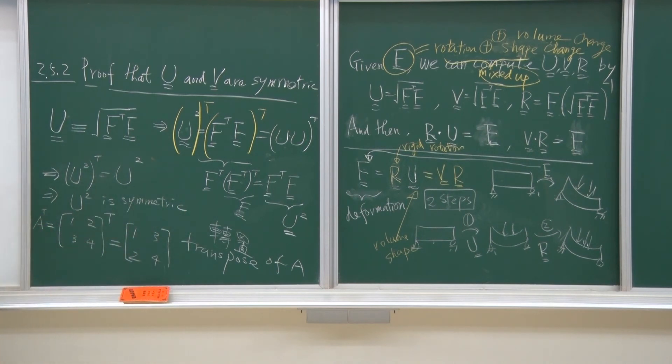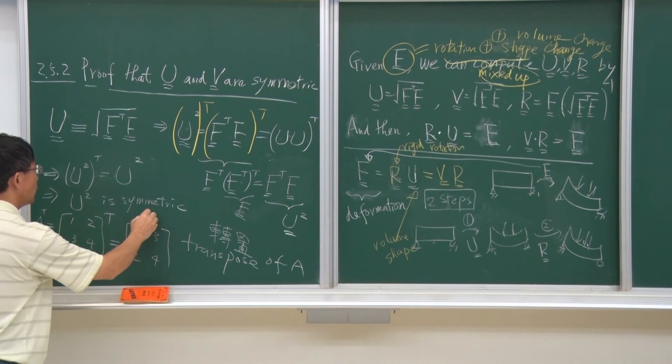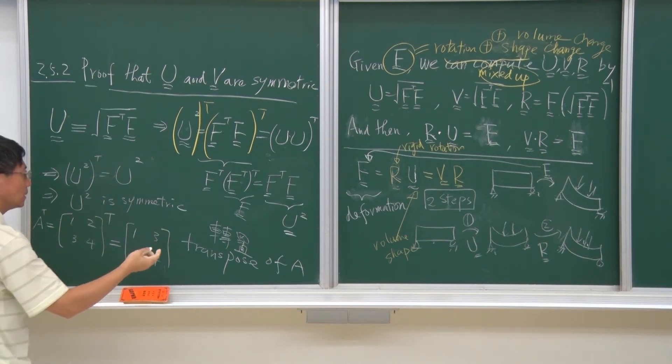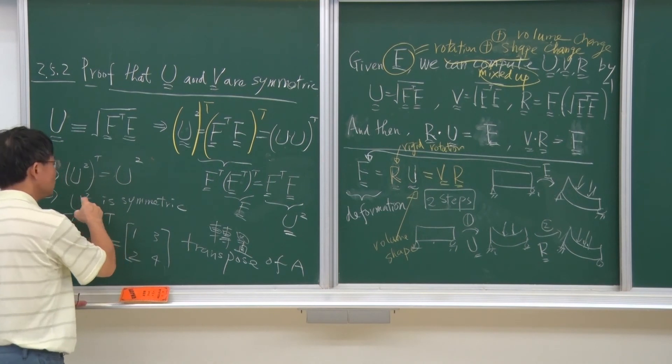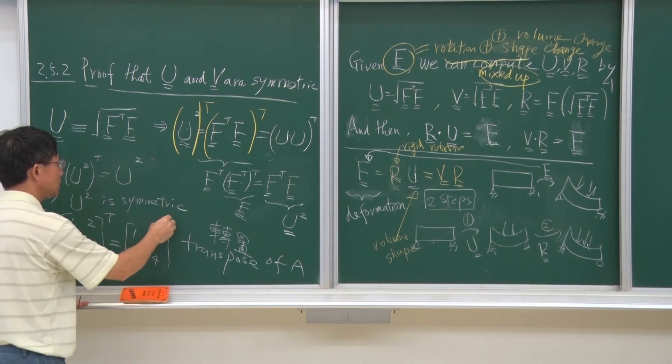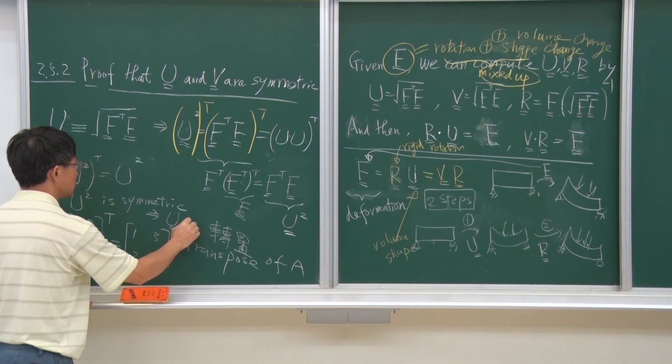U square is symmetric. And then, it is easy to infer that, I leave it as a homework for you to implement, because U square is a symmetric matrix, and then you can imply that U is symmetric.